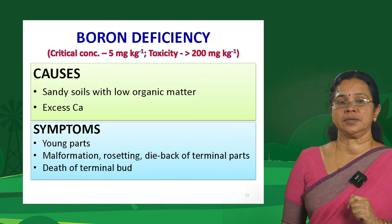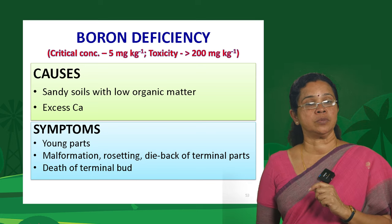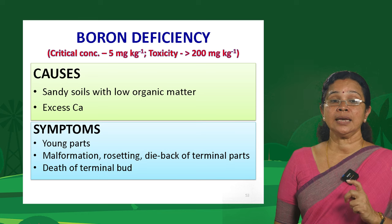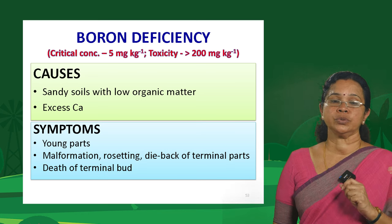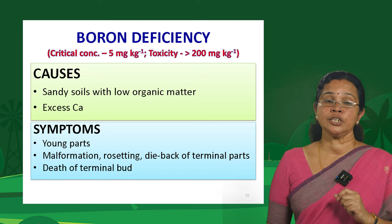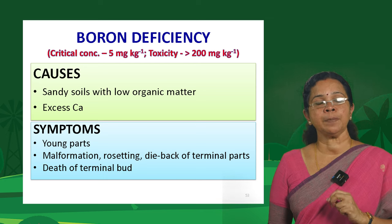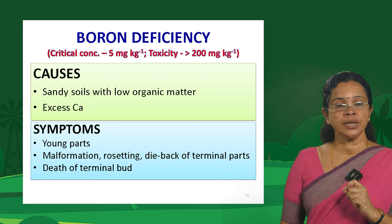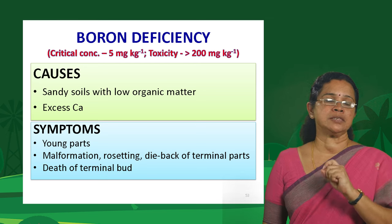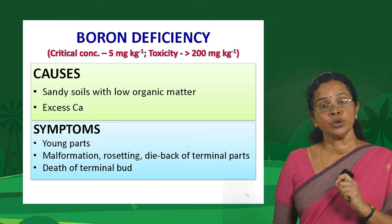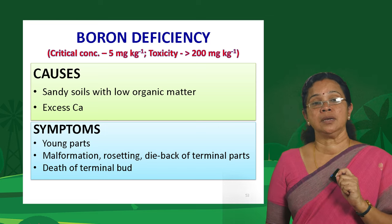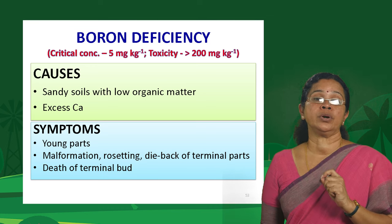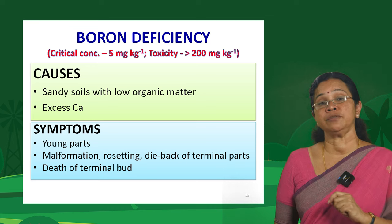Coming to boron deficiency — it is quite predominant in sandy soils with low organic matter. Excess content of calcium can counter boron — that is a calcium-boron antagonism. Symptoms appear in the younger parts of the plant in the form of malformation, rosetting and dieback of terminal parts. It results in the death of the terminal bud — a very typical symptom of boron deficiency. Boron shows widespread deficiency; among micronutrients, widespread deficiency of boron is seen, especially in a state like Kerala.